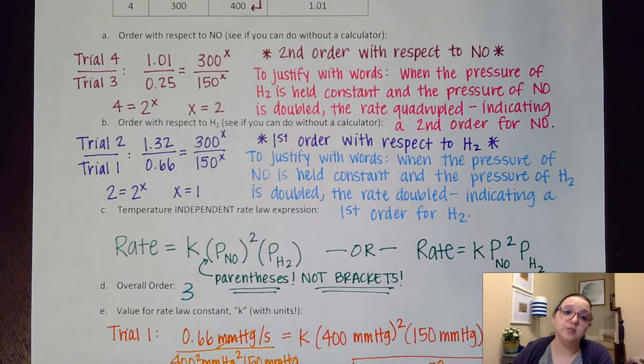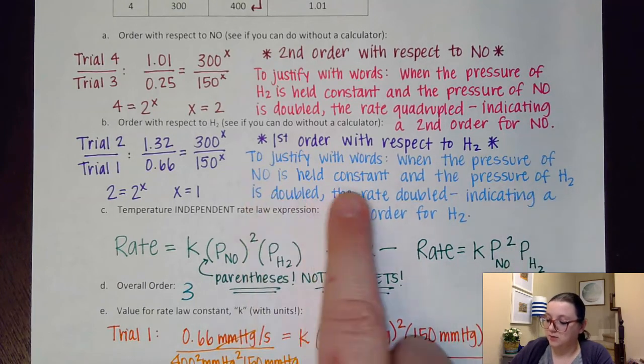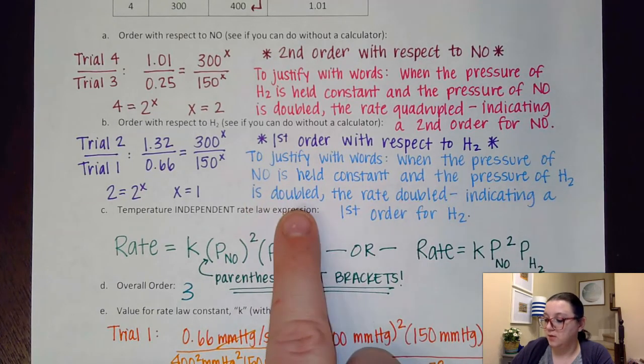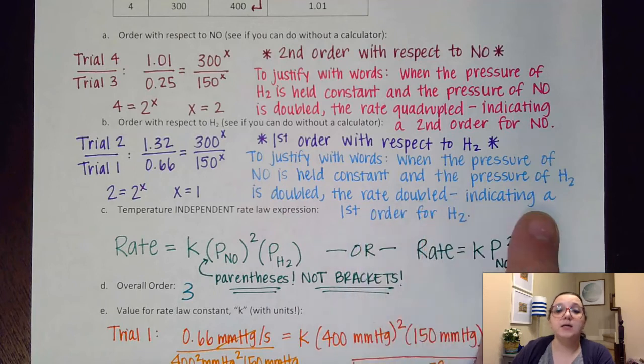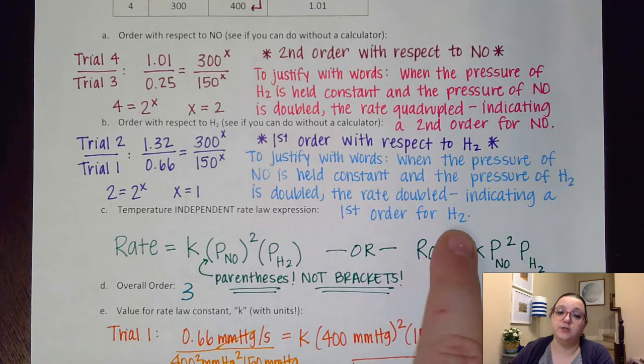Same thing goes on the other one. You can see my math here did confirm that it was first order with respect to H2. And so again, you could justify this with words. When the pressure of NO is held constant and the pressure of H2 is doubled, the rate doubled, indicating a first order for H2. Okay, so now let's talk about our temperature independent rate law expression.